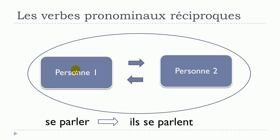So la personne numéro 1 parle à la personne numéro 2, and la personne numéro 2 parle à la personne numéro 1. This cycle will actually symbolize the concept of les verbes pronominaux réciproques.